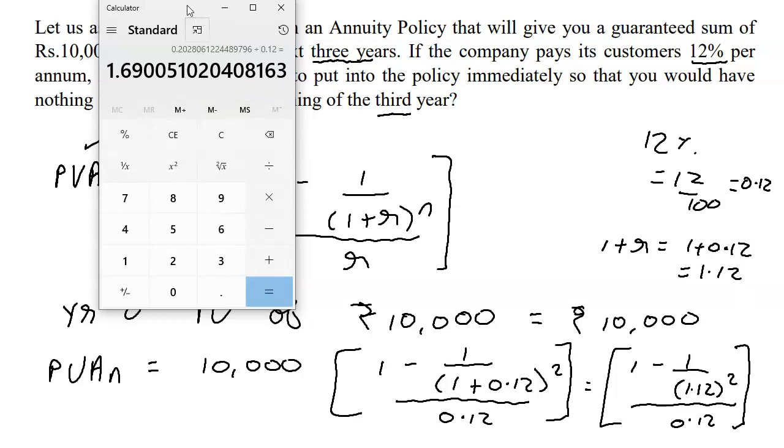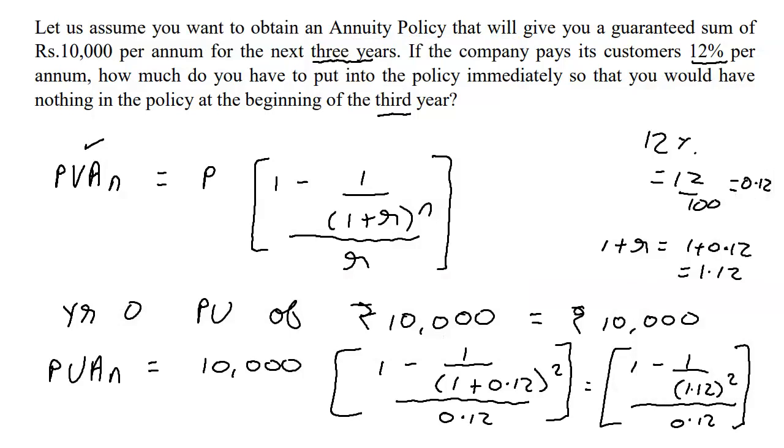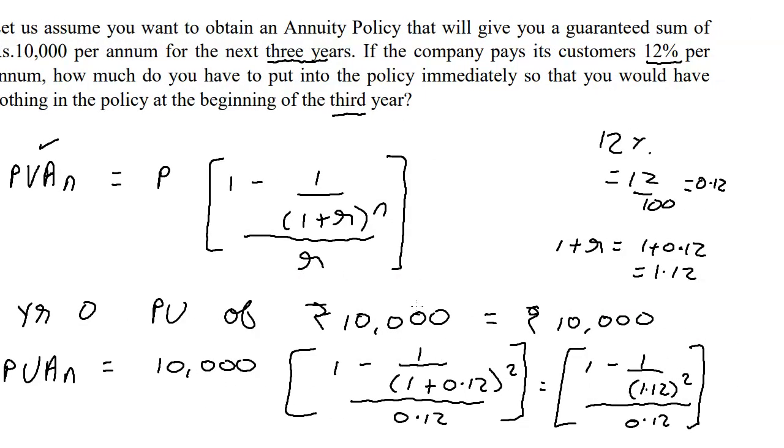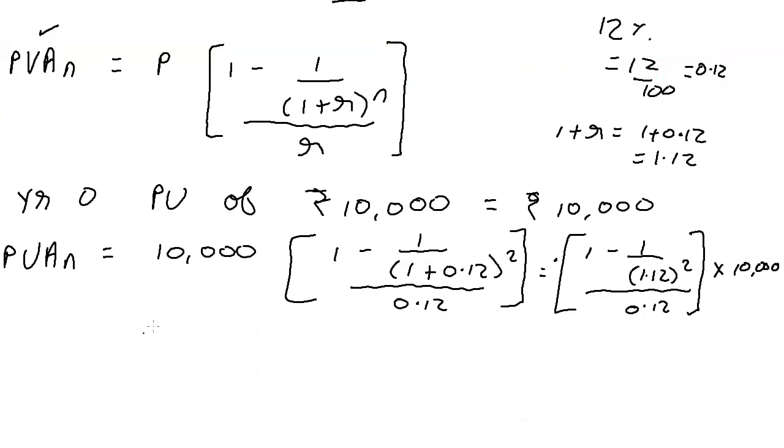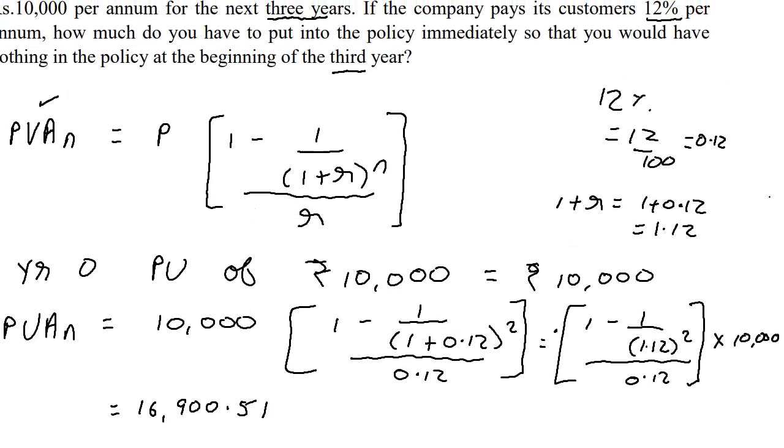And remember, I have only written, PVAN is equal to 10,000 into all of this. I should have written it here. I'm just going to write it here for now. This whole thing has to multiply by 10,000. Into 10,000, which gives me this number, 16,900.51. I have 16,900.51. But this is only for the two years. What about the original 10,000? The present value of that remains 10,000.